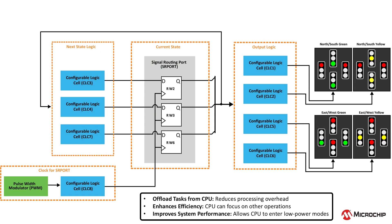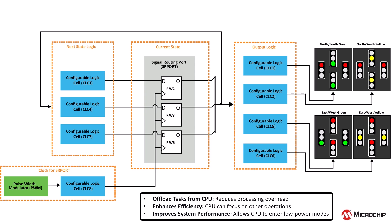By using core independent peripherals, these tasks are offloaded from the CPU, eliminating processing overhead, and enabling the CPU to handle other operations or even enter low-power modes, improving efficiency and overall system performance.